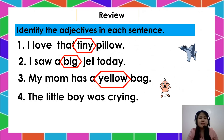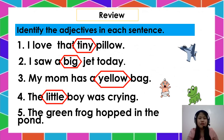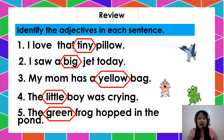Number four: The little boy was crying. What is the adjective in this sentence? Great! That is little. And number five: The green frog hopped in the pond. What is the adjective being used in this sentence? Very good! It is green. Can you repeat the adjectives in the sentences? Repeat after me: tiny, big, yellow, little, green. Great!